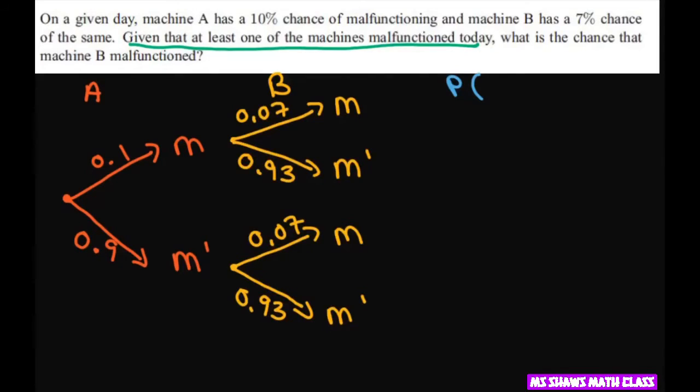Given that at least one of the machines malfunctions, what is the chance that it's B? We want probability of B and malfunction divided by malfunction, because that's the given at least one of the machines.